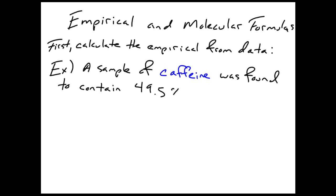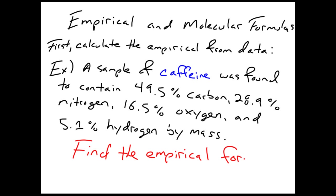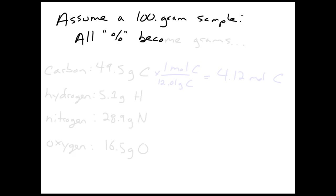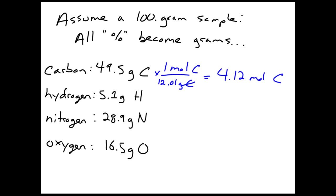With mass percents, it's pretty easy. As you can see here, we've got a sample of caffeine — there's the percentage of carbon, nitrogen, oxygen, and hydrogen by mass. From those percents, we can actually convert those numbers directly into grams. All we need to do is imagine we have a 100-gram sample of our substance. If 49.5% of that sample is carbon, then we have 49.5 grams of carbon, which can be converted to moles.